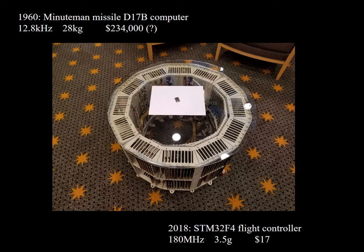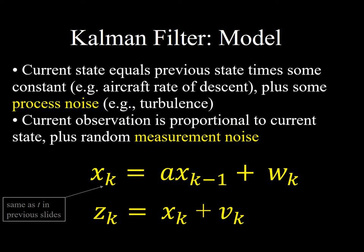Kalman filtering basically got us to the moon — it did this kind of state estimation without having to run the massive computations and storage of a particle filter. The Kalman filter is built on a very simple premise: the observation Z is equal to the state itself — in other words a perfect observation — plus some noise. That noise can come from a variety of places. The noise v_k is sometimes called the measurement noise. If you've ever used any kind of sensor, you know sensors are noisy, and there's massive amounts of Kalman filtering going on in your GPS, for example, to get rid of all the indeterminacy in that signal.